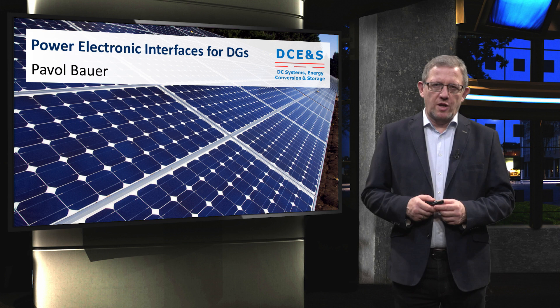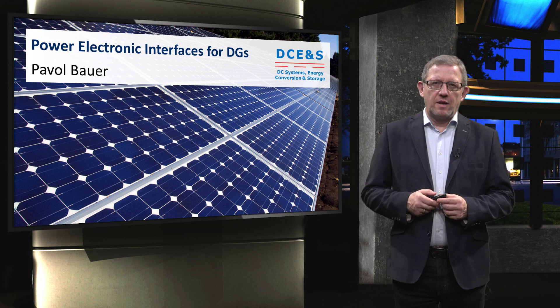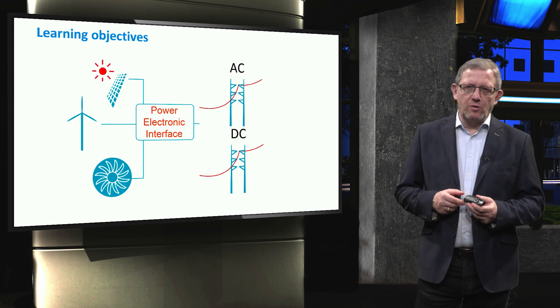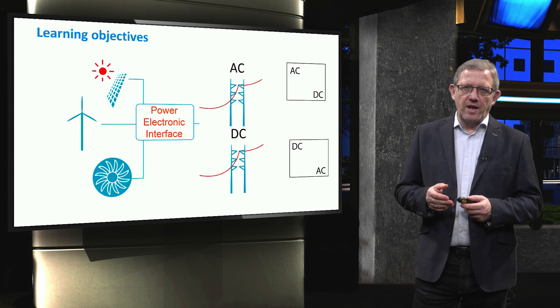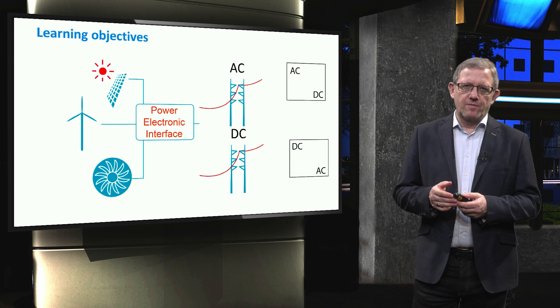We have seen in the previous weeks that distributed generators, but also storage and loads, are connected via interfaces based on power electronic conversion. In this video we give a survey of topologies for power electronic converters used in distributed generators. Power electronic interfaces connect components such as generators, solar, wind, or storage with the loads within a microgrid. Different conversion steps such as DC-AC, AC-DC, or DC-DC are needed to match the input and output voltage of the single components to a microgrid voltage.